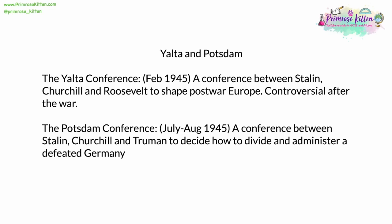There were two important conferences in 1945, at Yalta and at Potsdam, which shaped the immediate events after the war. The Yalta conference, held in February of that year, was between Stalin, Churchill, and Roosevelt. Its purpose was to shape post-war Europe. After the war, as people disagreed about how Europe should be shaped, this conference and the decisions made at it became increasingly controversial. The Potsdam conference, held between July and August 1945, was between Stalin, Churchill, and Truman, who had replaced Roosevelt as president.